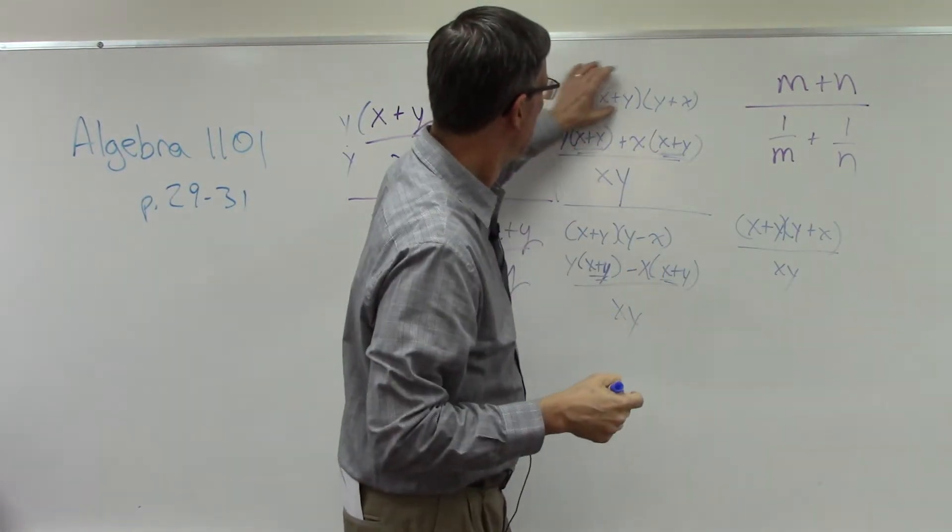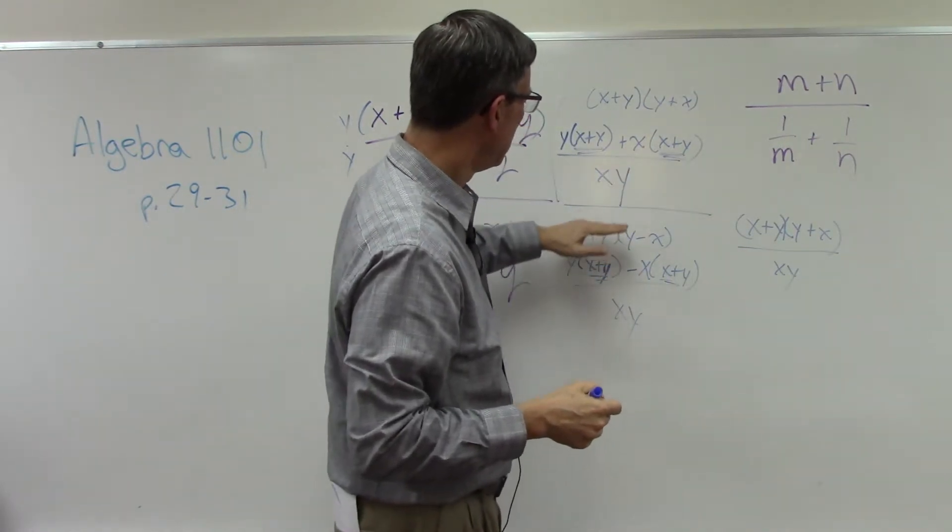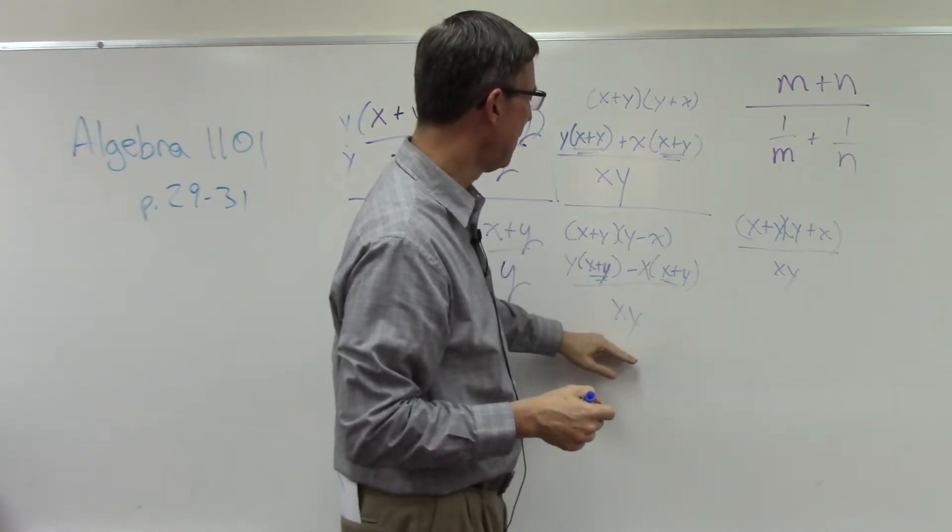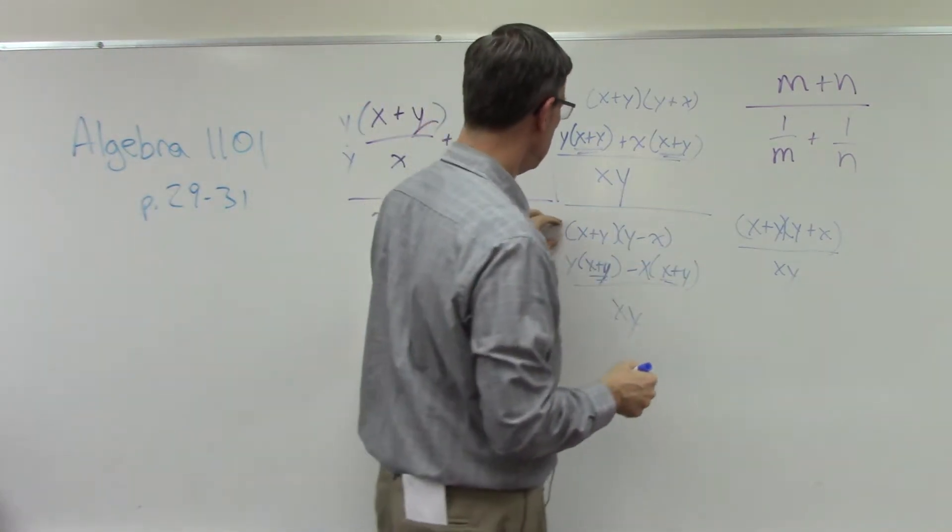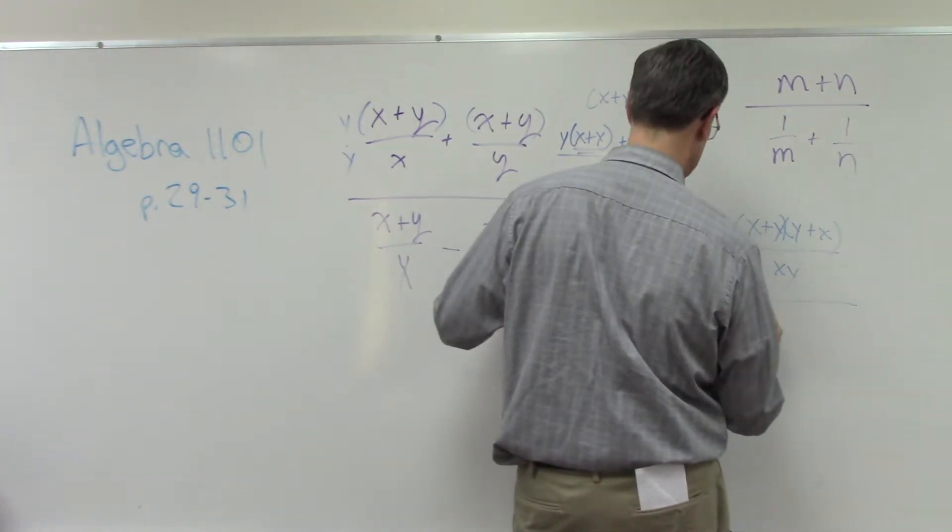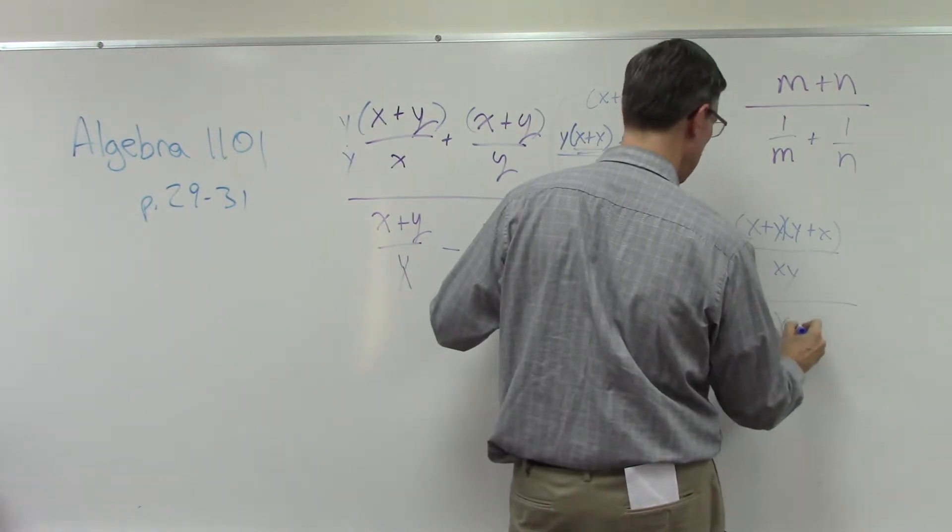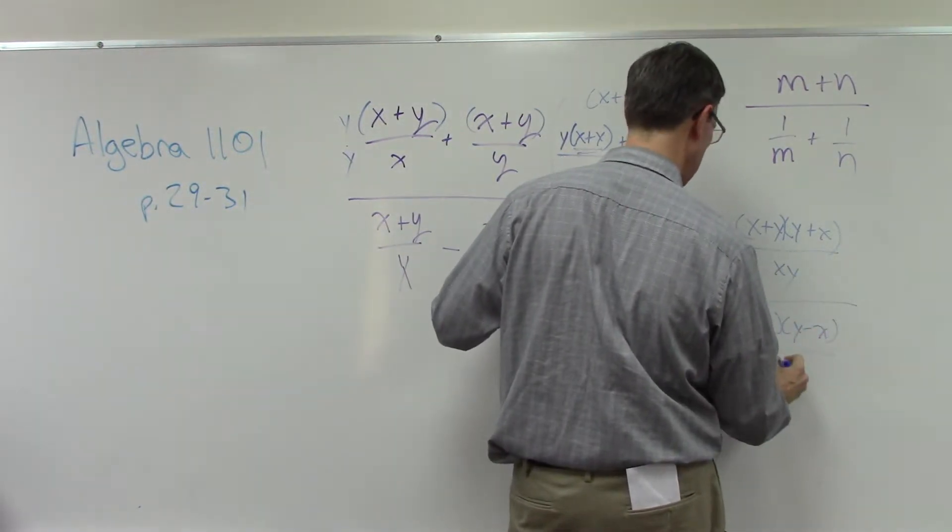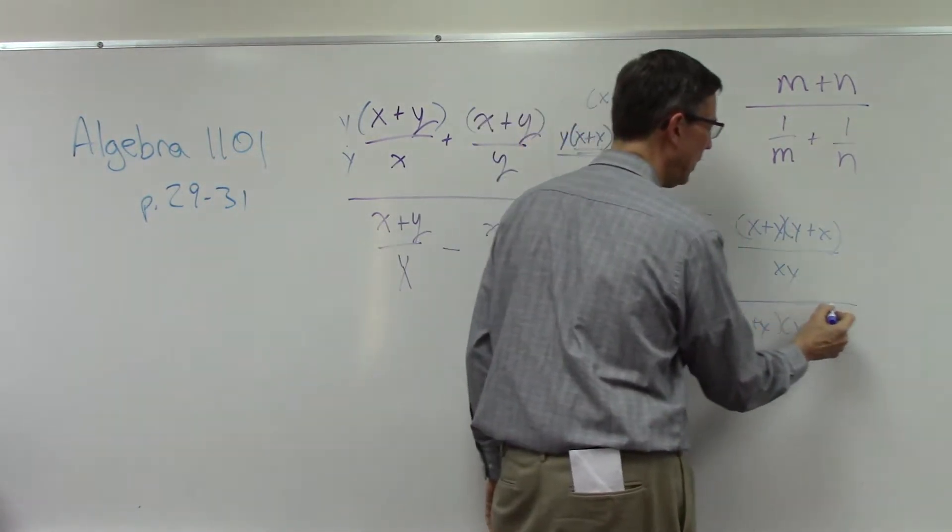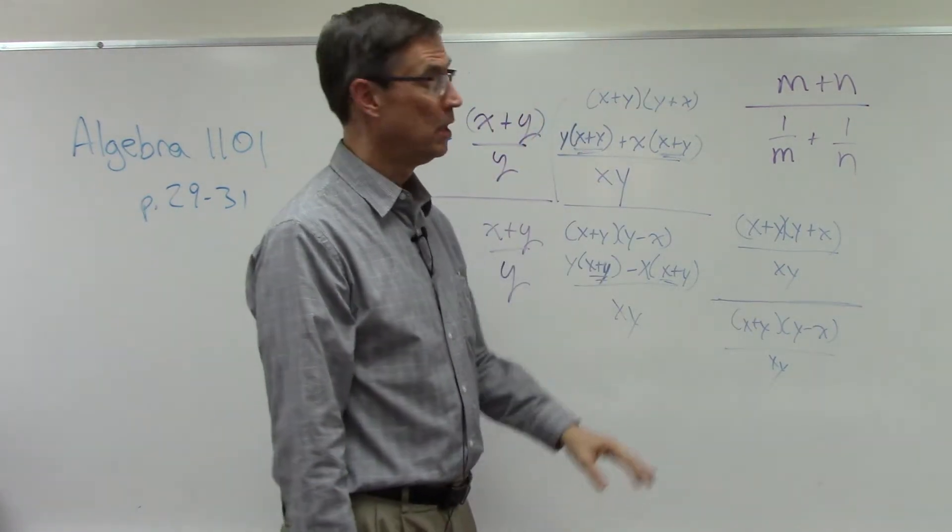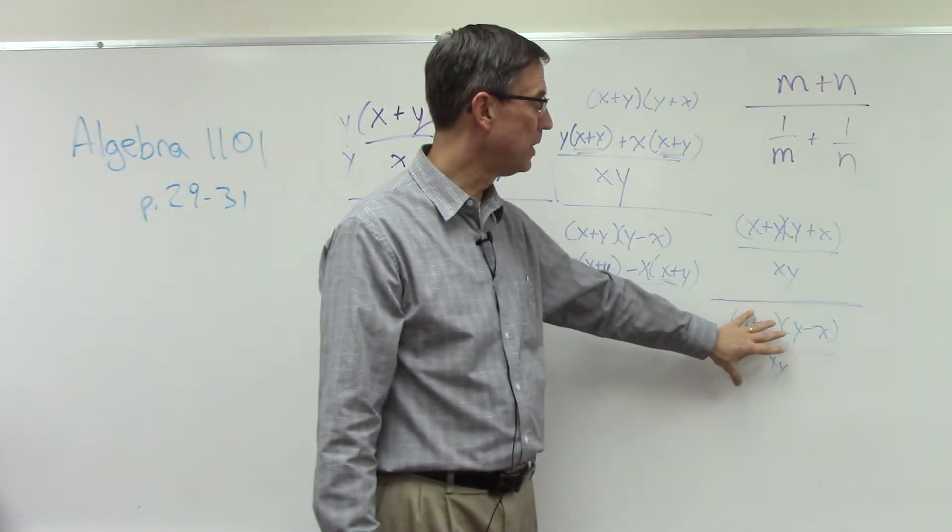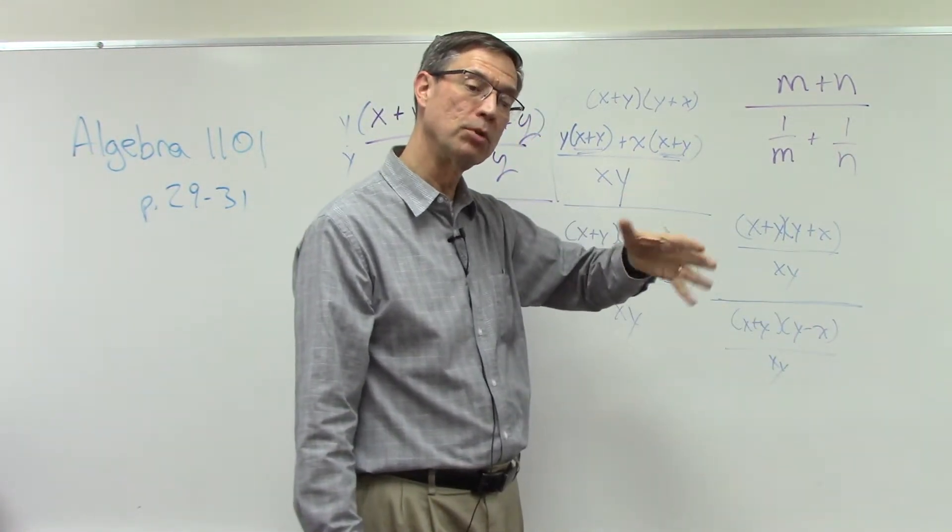So that's this, which I've simplified over this. Now notice, this is a big line here. This means I'm dividing by this whole denominator. So I simplified this to be this, and x plus y times y minus x, all over xy. Now when we have a big fraction divided by a fraction, do you remember how we solve that? We're going to take the numerator, and we divide by the denominator, which means we multiply by the reciprocal.